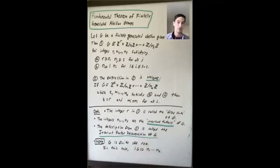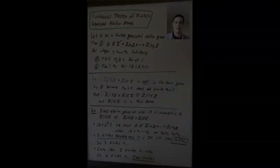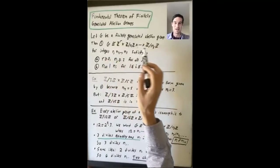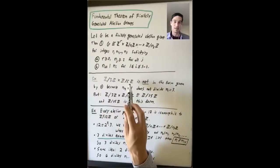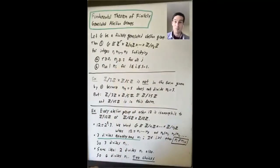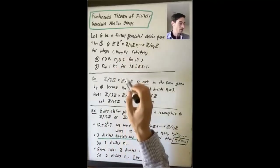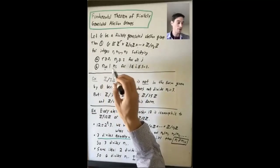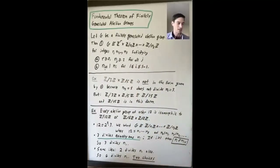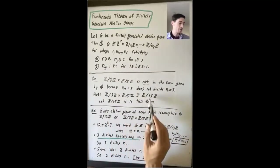Later in this lecture, we'll see another equivalent statement of this fundamental theorem for finitely generated abelian groups, specialized to the case of finite abelian groups. I've left up the first part of the theorem saying G is isomorphic to a direct product of a particular form. I've erased the uniqueness part, but keep that in mind. Now I want to talk about some examples.